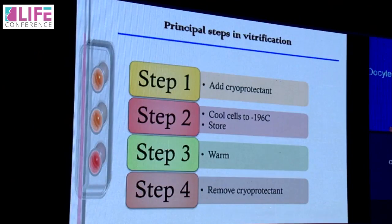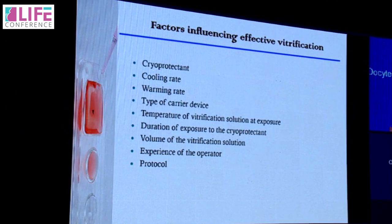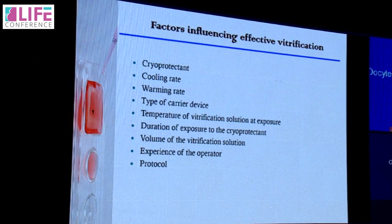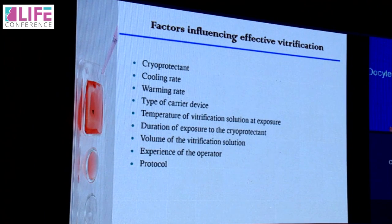The principal steps in vitrification are: first, adding the cryoprotectant; then cooling cells to minus 196 degrees centigrade; then warming the cells; and finally removing cryoprotectants. Many factors affect successful vitrification, including cryoprotectants, cooling rates, warming rates, type of carrier device, temperature of the vitrification solution at exposure, duration of exposure, volume of vitrification solution, and experience of the operator and protocol used.